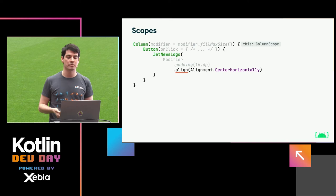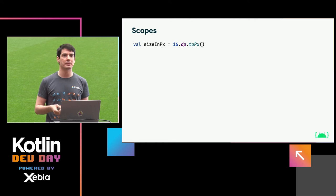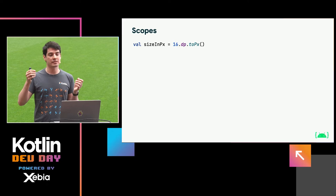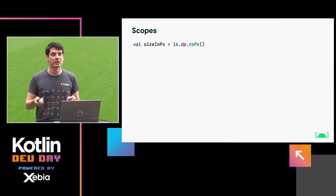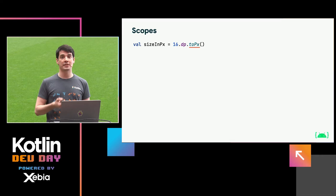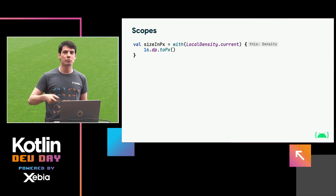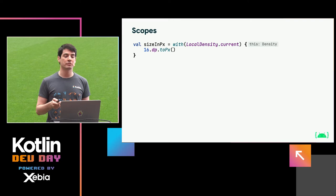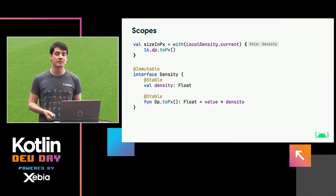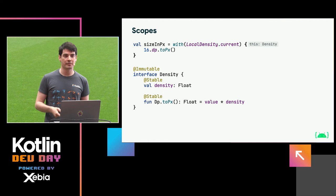Another place where we can spot scopes in Compose is conversions between measurement units. Android has the dp unit — a density-independent pixel — used in designing applications because screens might have the same size but different resolutions. When you actually want to draw something on screen, you eventually need to convert DPs into real pixels. An extension for that would be nice, but you also need information about the density of the screen. In Compose, you would get an instance of Density from somewhere, scope yourself into it using Kotlin's with function, and then be able to call a toPx extension function.